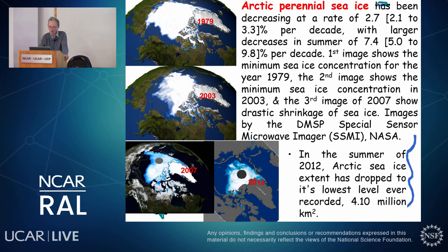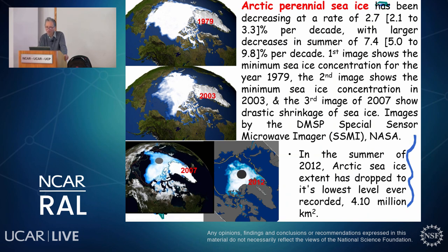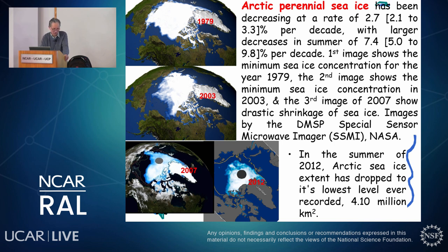Arctic sea ice captured by NASA's SSMI satellite — first picture taken in 1979 — shows subsequent images in 2003, 2007, and 2012 with clear decline. Arctic sea ice has been declining by about 7.4% per decade; over recent decades it has declined by about 40%. This is another sign of global warming impact, with the cryosphere being the most prominent indicator. Many of these images are published in the book 'The Global Cryosphere,' recently published in 2022.